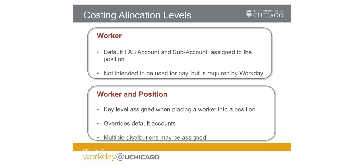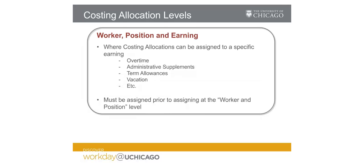At this level you can also adjust distribution percentages if a worker's compensation is funded from multiple accounts, or establish start and end dates if you know in advance when a worker's funding will change. Lastly, costing allocations can be assigned at the worker, position, and earning level. This allows dedicated FAS accounts and FAS subaccounts to be assigned to specific earnings within the employee's compensation package, such as administrative supplements and term allowances.